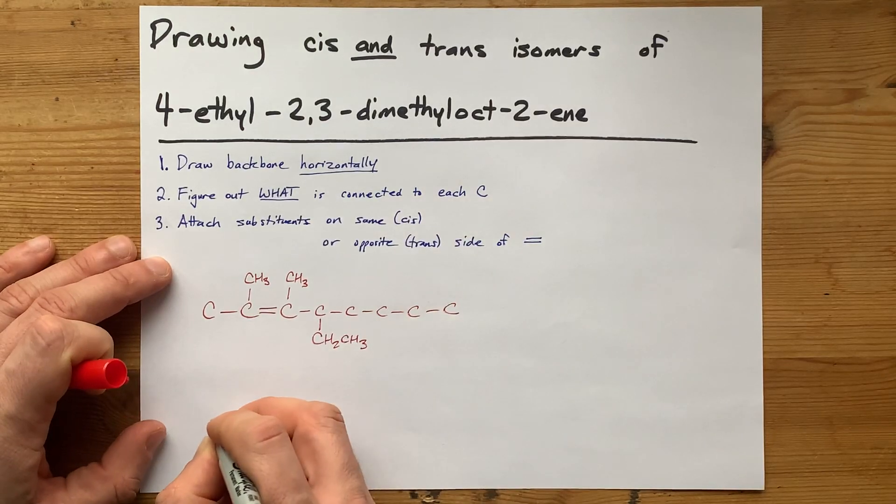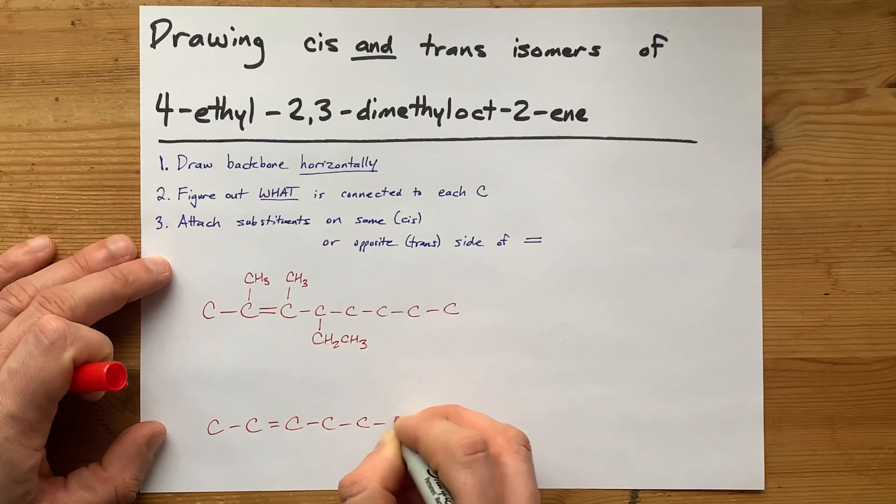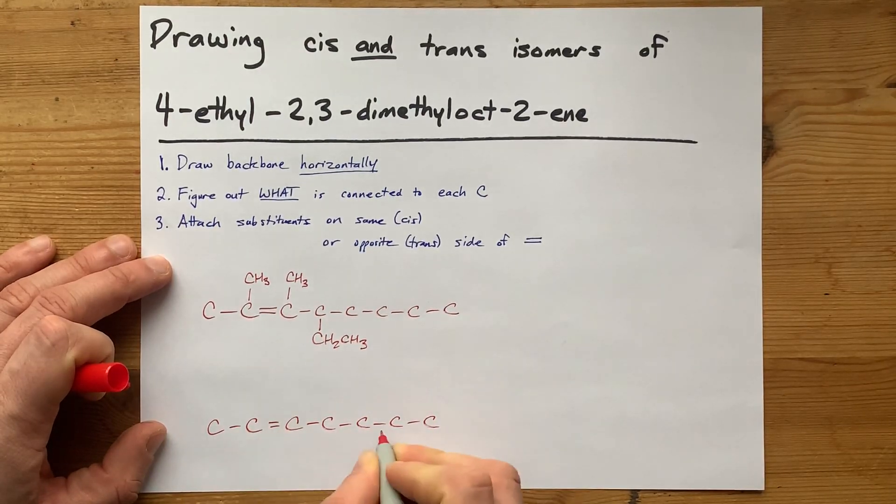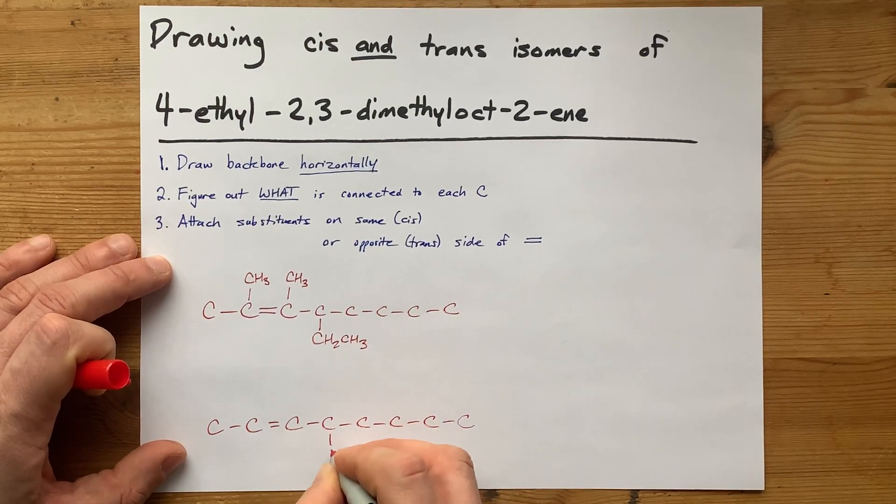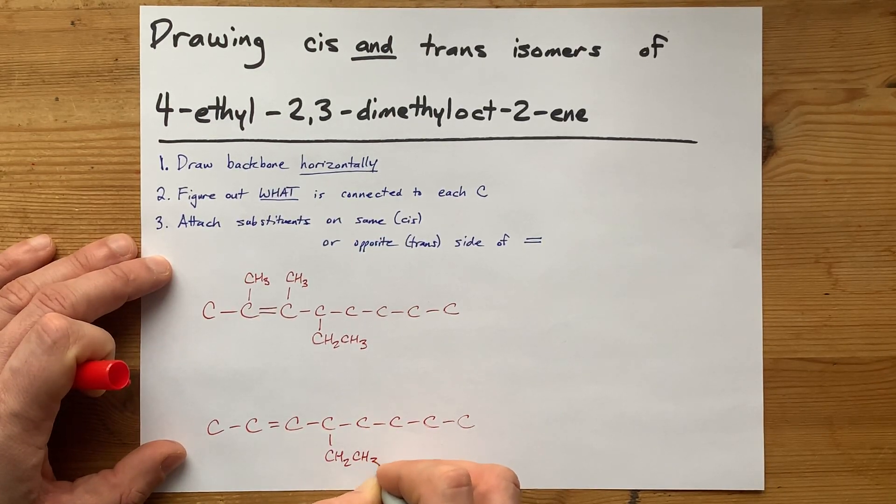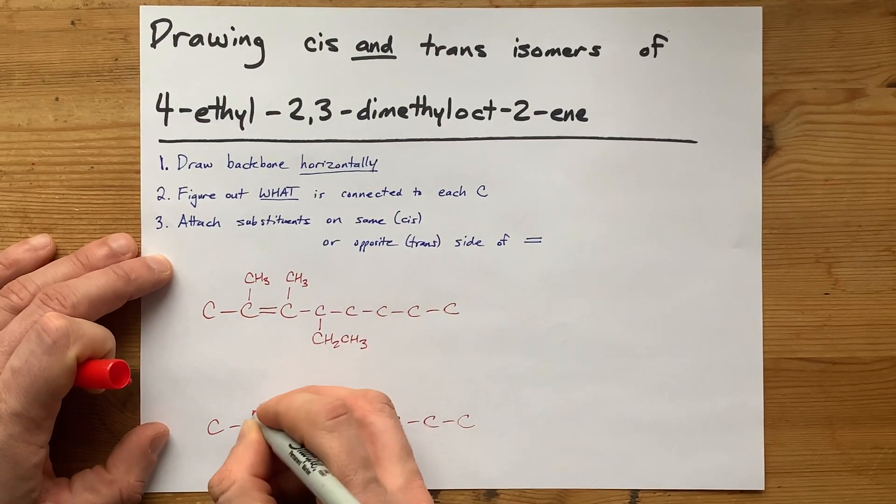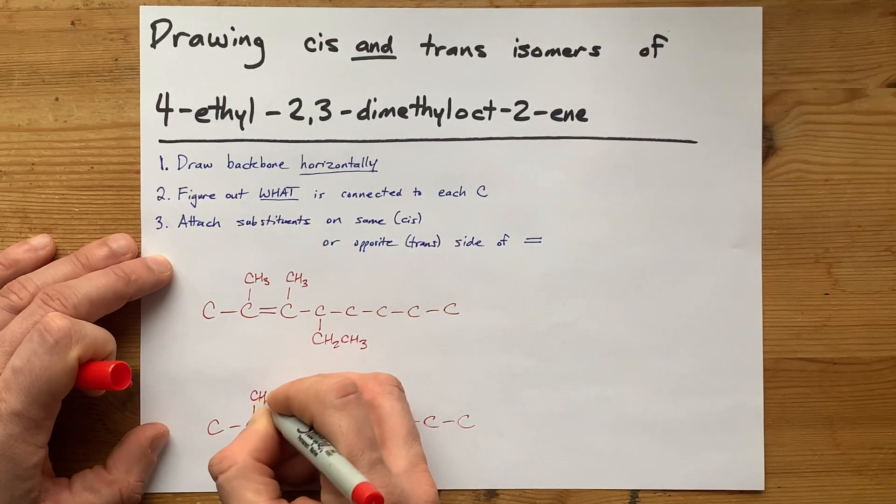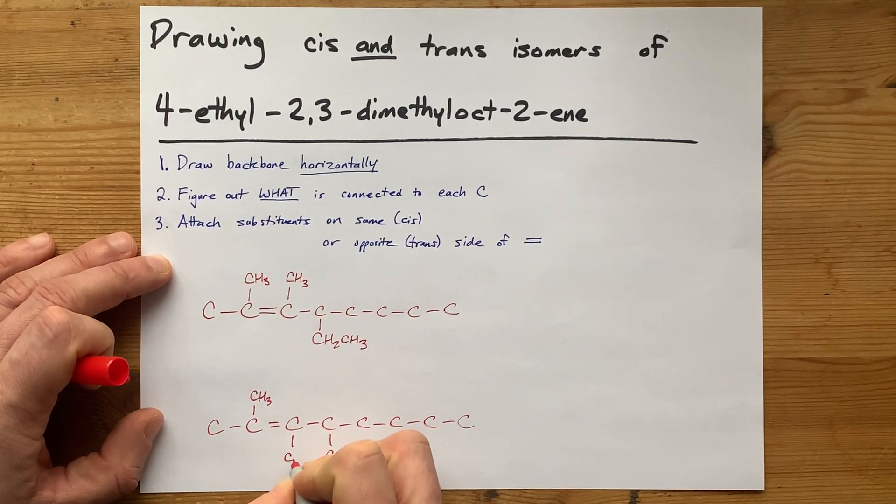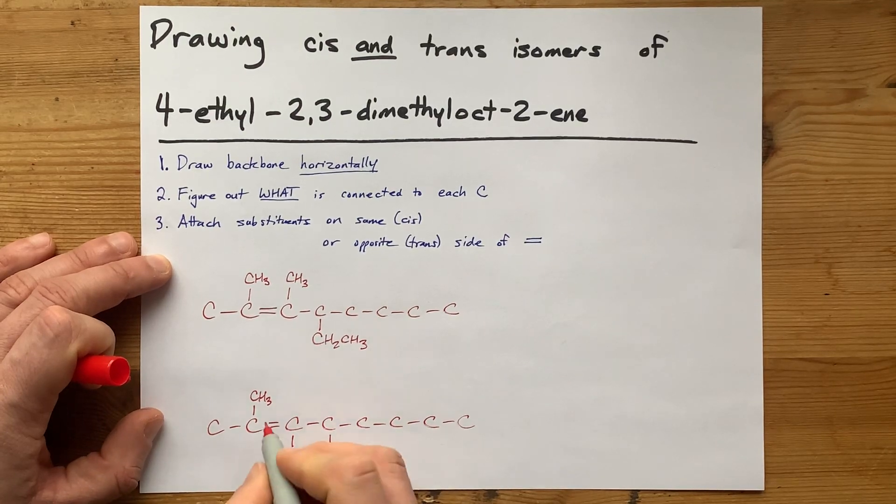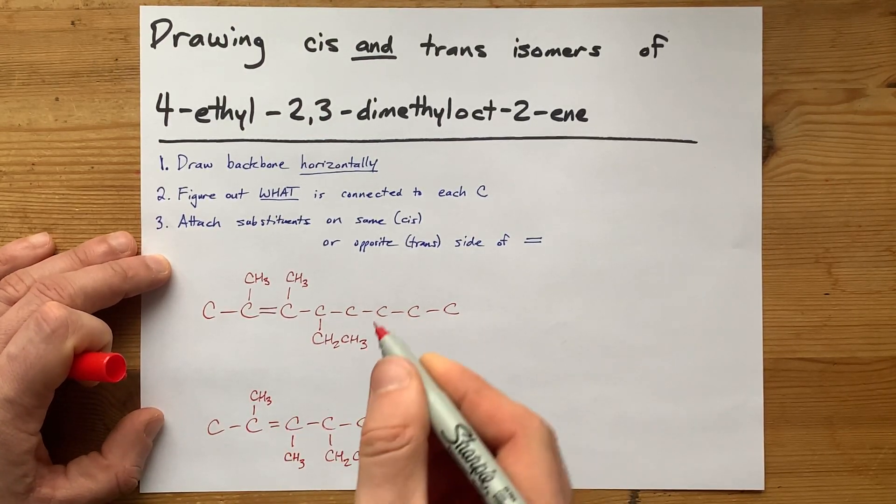Now, to do trans, I'm going to do basically the exact same thing until that last step. I first need my backbone. That's seven, eight carbons in a row. Carbon four has an ethyl group on it. And then, if I need the trans isomer, one of the methyl groups has to be above the line of the molecule, and one has to be below. It doesn't matter if the first one's below and the next one's above. What matters is that they're on opposite sides.